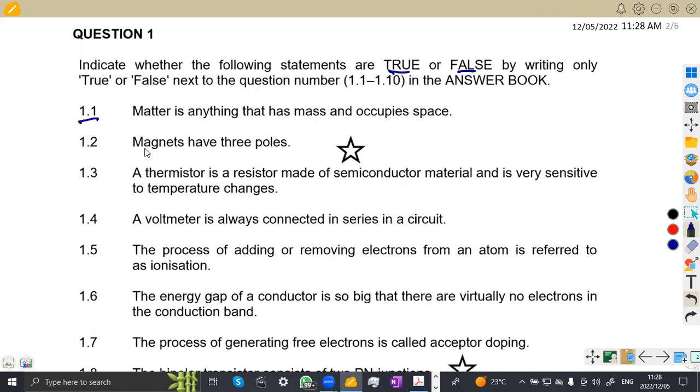The first part, which is 1.1, matter is anything that has got mass and occupies space. Is this true or not? That is the true definition of matter, guys. As we know that matter, it has got mass and occupies space. That's anything.